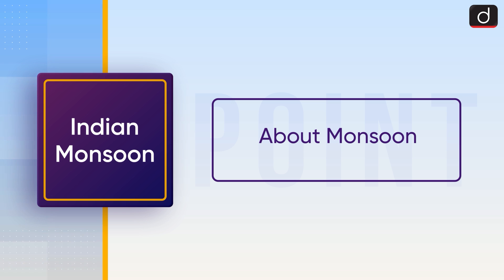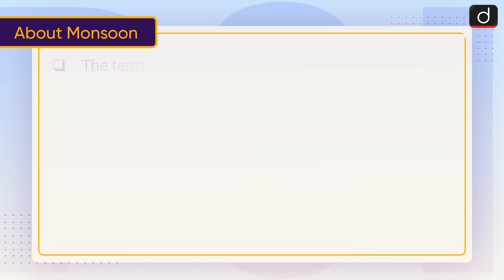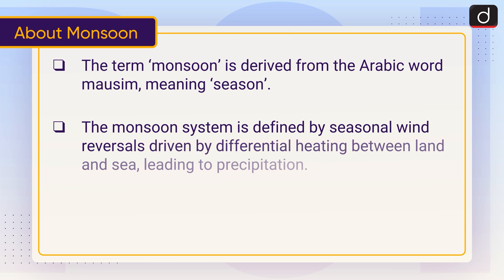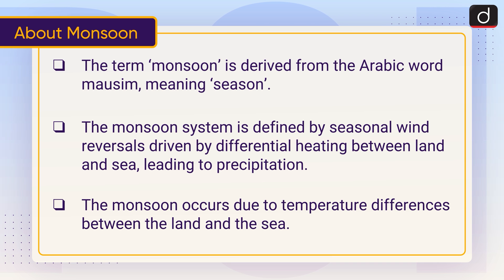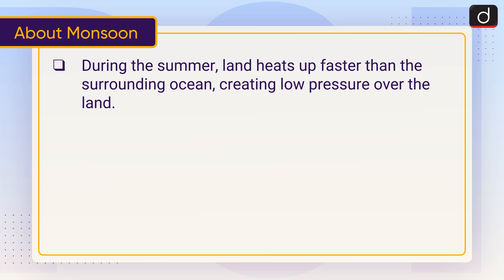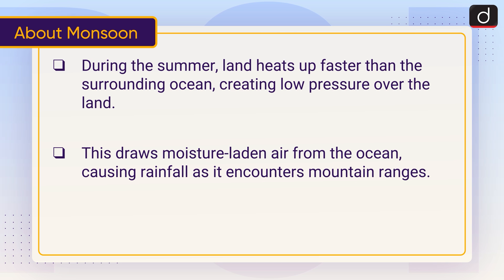Now let's discuss about monsoon. The term monsoon is derived from the Arabic word 'mauzim', meaning season. The monsoon system is defined by seasonal wind reversals, driven by differential heating between land and sea, leading to precipitation. During the summer, land heats up faster than the surrounding ocean, creating low pressure over the land. This draws moisture-laden air from the ocean, causing rainfall as it encounters mountain ranges.